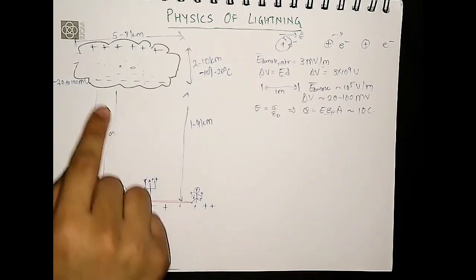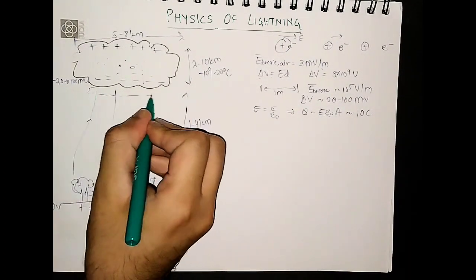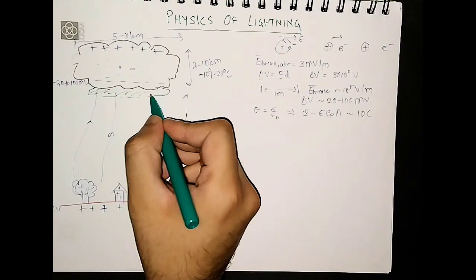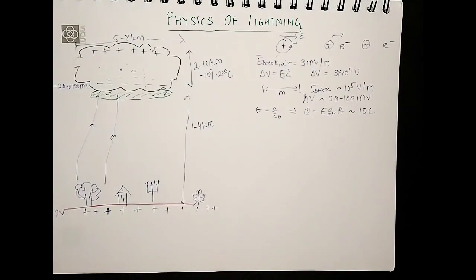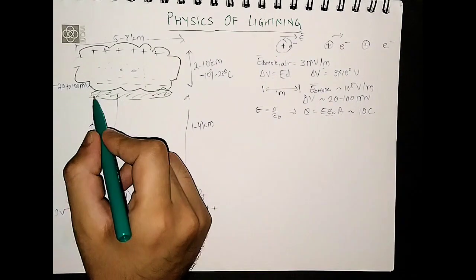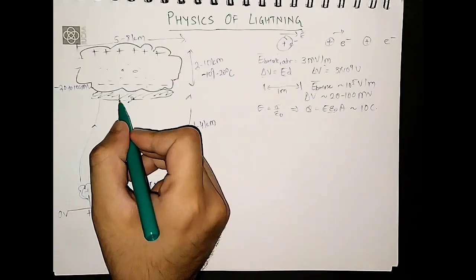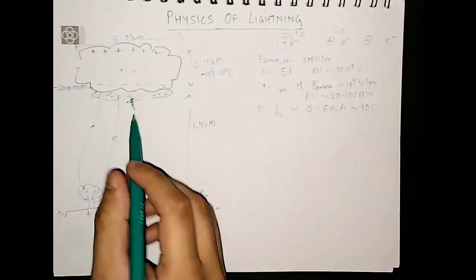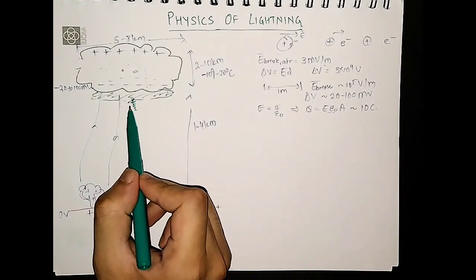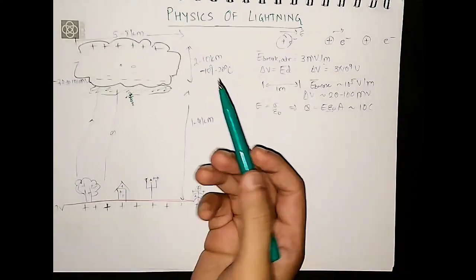Now that we have such a huge charge and a huge electric field — enough to initiate a breakdown of air — the air just below the cloud gets ionized because of this breakdown process. The green part I am drawing represents the ionized plasma state, which is a perfectly conducting state. We now have these free electrons, and because of the electric field, they are accelerating downwards. As they come down, being very high in charge density, they have a higher electric field in their surroundings, so they cause dielectric breakdown of the air surrounding them.